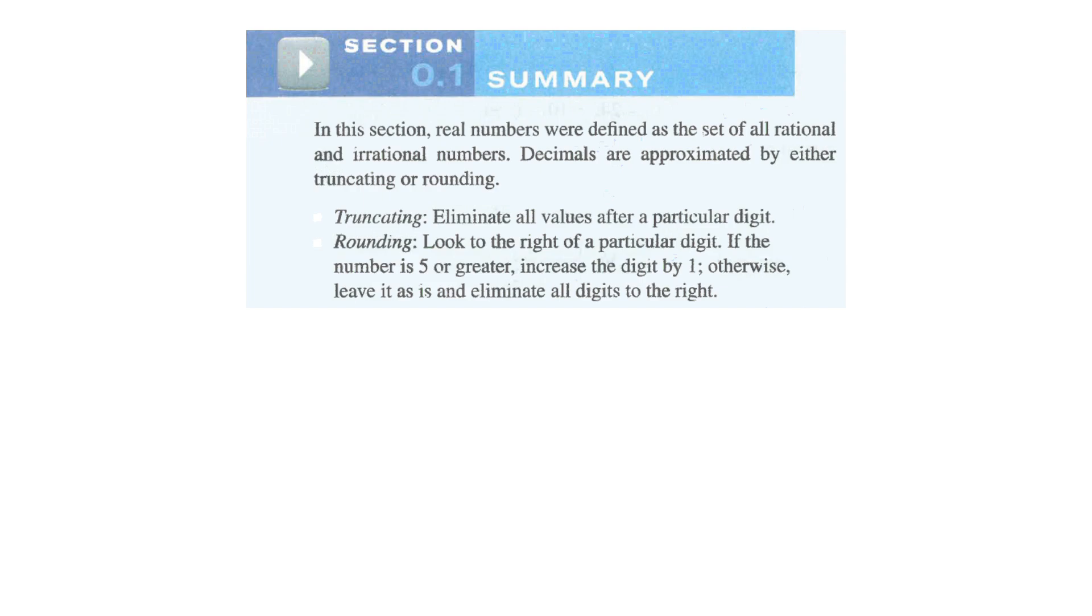I've taken the summary to break this down into all the things we need to go through. We're going to start by talking about real numbers and the set of all rational and irrational numbers. Then we're going to talk about decimals are approximated by either truncating or rounding. Truncating is you need to eliminate all the values after a particular digit. So if I say truncate two digits, and it was 1.2345, we would just say 1.23. That'd be truncated to two digits.